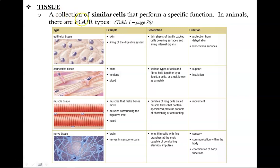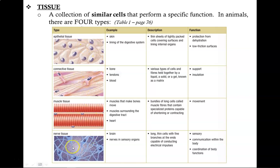If you recall, tissues are a collection of similar cells that perform a specific function, and in animals there are four major types. Blood is a type of connective tissue, and it circulates throughout the body. When bright red in color, it indicates that the blood carries a lot of oxygen inside of it. When it doesn't carry a lot of oxygen, it is a dark red color.